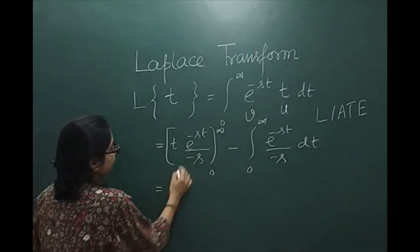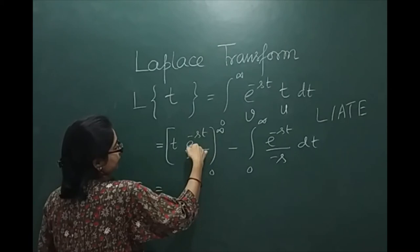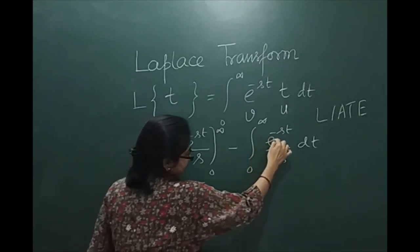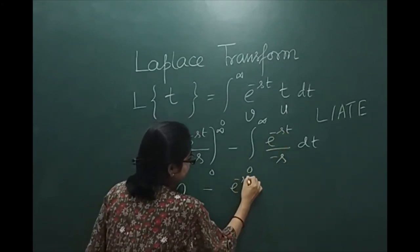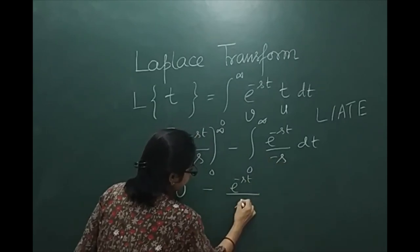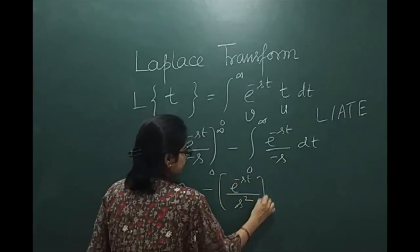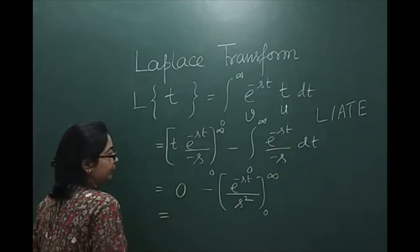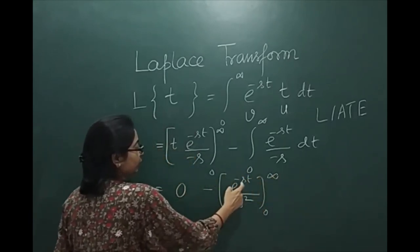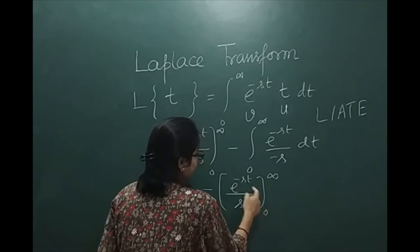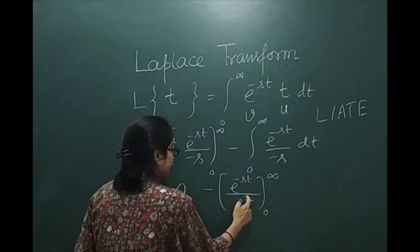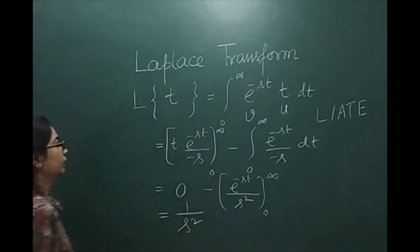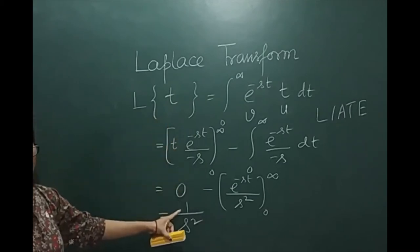Now the integral of e^(-st) divided by (-s) gives e^(-st) divided by s², evaluated from 0 to infinity. Again, like before, if we put infinity we get the first term as 0, and for the second term we get 1/s². The two minus signs make a plus, so we get 1/s². Therefore, the Laplace transform of t is 1/s².